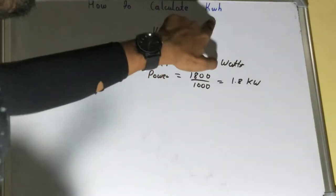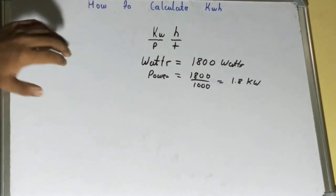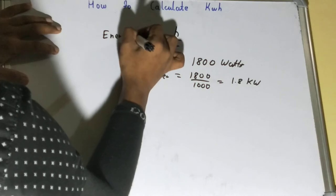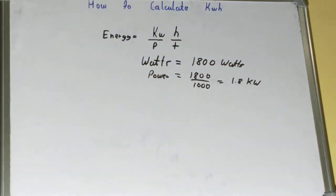But if we talk about the kilowatt-hour, kilowatt-hour is basically the unit of energy. And this is required when you use different appliances and you want to find out the energy consumed by them over different time durations.